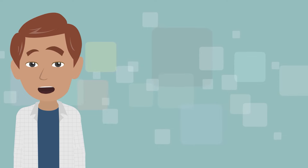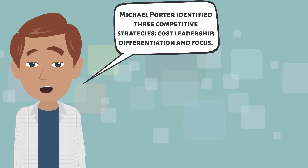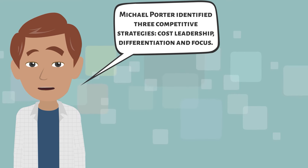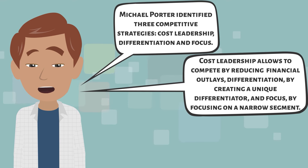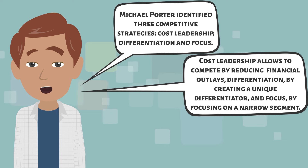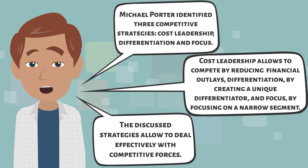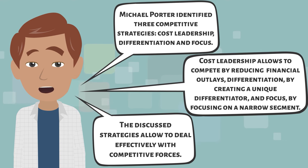In conclusion, we've learned from this video that Michael Porter identified three competitive strategies: cost leadership, differentiation and focus. Cost leadership allows an organization to compete by reducing financial outlays, differentiation by creating a unique differentiator, and focus by focusing on a narrow segment. The discussed strategies allow an organization to deal effectively with competitive forces, although each of them does it in a different way.